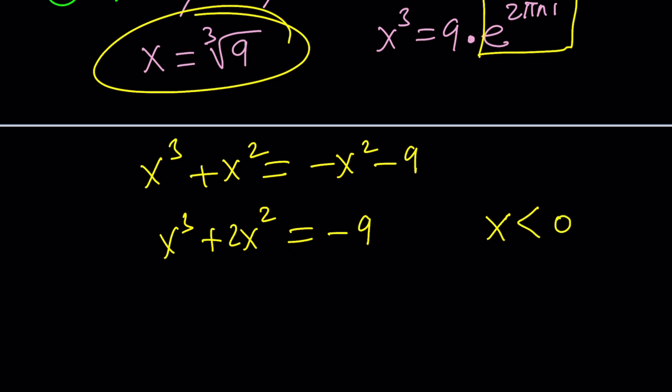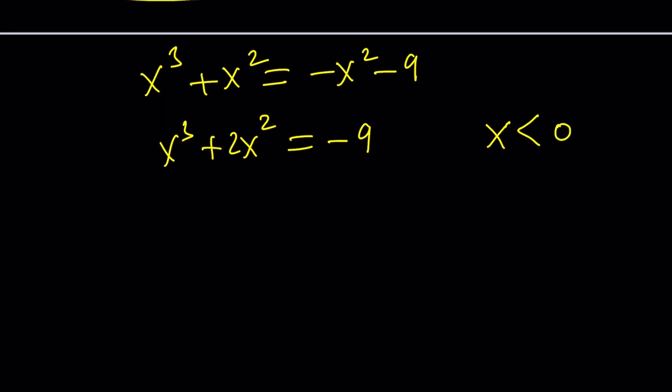Second, we can test some numbers. How about negative one? It's not going to work. How about negative two? Maybe it'll work. Who knows? If x is negative two, we're going to get negative eight. Negative two squared is four. Four times two is eight. We got a zero. Too bad.